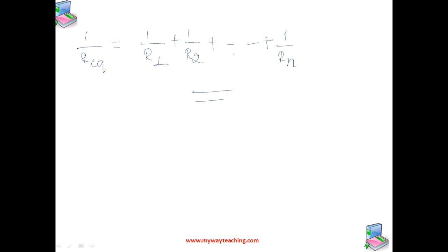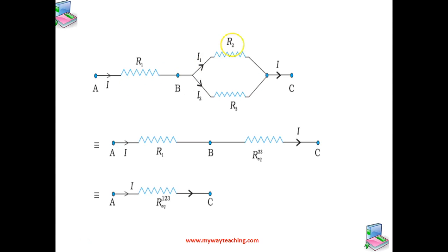These formulas for equivalent resistance can be used to find currents and voltages in more complicated circuits. Consider a circuit with three resistors R1, R2, and R3. R2 and R3 are in parallel because they are connected between the same two points D and C. R1 is in series with the parallel combination of R2 and R3.